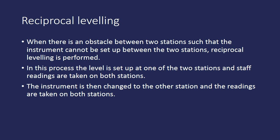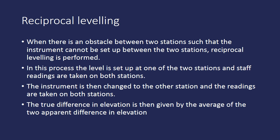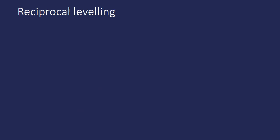The process involves first setting up the level and taking readings for both stations, then changing the instrument to the other station and taking readings on both sides. We then find the true difference in elevation given by the average of the two apparent differences in elevation. For the first observation we have two staff readings, and for the second observation we have two more staff readings, and we take the average to find the true difference.